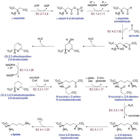Precursor compounds can also join together to create a macromolecule. For example, fatty acids join together to form phospholipids. In turn, phospholipids and cholesterol interact noncovalently to form the lipid bilayer. This reaction may be depicted as: molecule 1 plus molecule 2 yields macromolecule.